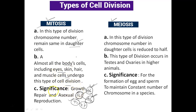The significance of mitosis: wound healing, growth, and repair and replacement of torn cells all occur through mitosis. Even asexual reproduction in lower organisms is due to mitosis. It is also known as equational division, because the daughter cells have an equal number of chromosomes to the parent cell.